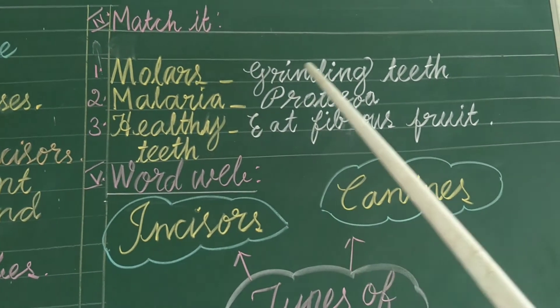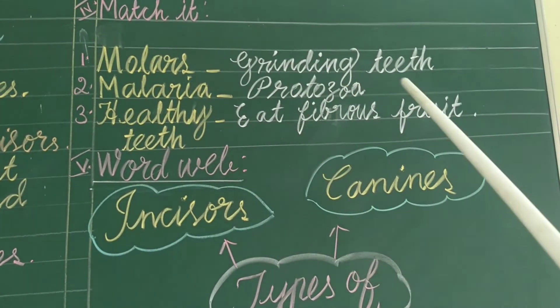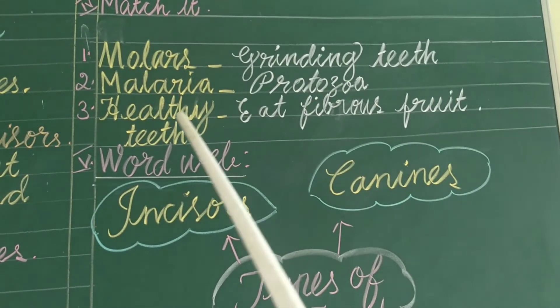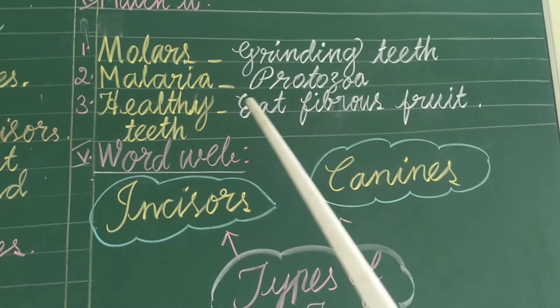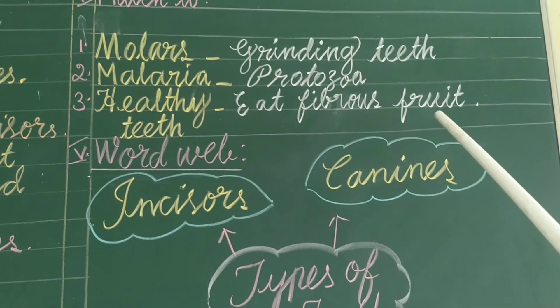Molars are grinding teeth. Malaria: protozole. Healthy teeth: eat fibers, fruit.